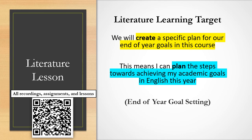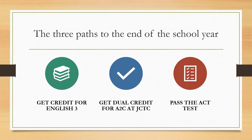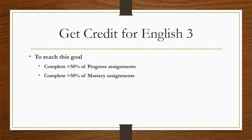Our literature learning target for the day is to create a specific plan for our end-of-year goals in this course. There are really three different things you might be focusing on: first, just getting credit for English 3; second, getting dual credit for A2C at JCTC; and third, passing the ACT test. To get credit for English 3, you just need to complete more than 50% of our progress assignments and 50% of the mastery assignments in this course.